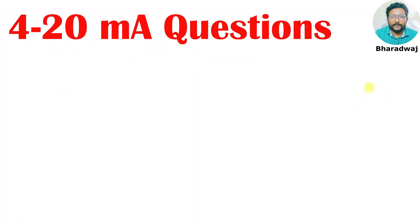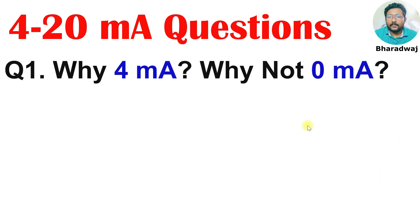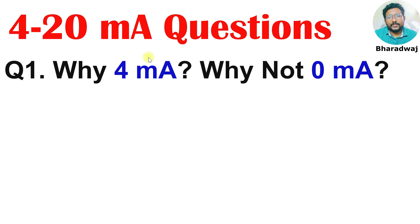In the previous video, we discussed analog inputs, analog outputs, and their relation with 4 to 20 mA. Now I have some questions. Why 4 mA? Why not 0 mA? If you see the range, it is 4 to 20. We can also use 0 to 20. Why are we not using 0? So this is one question.